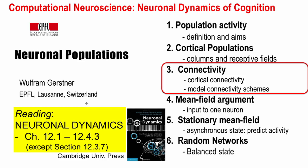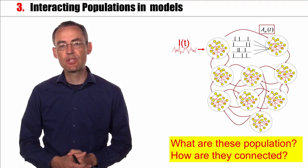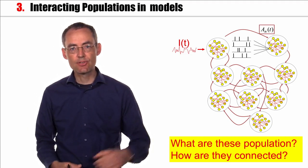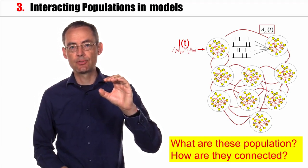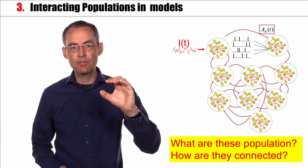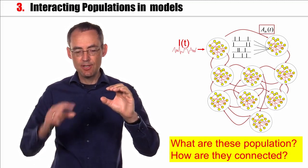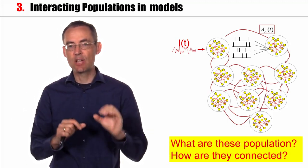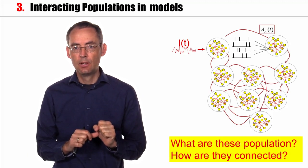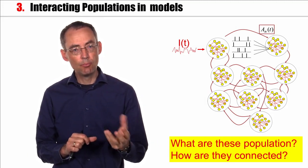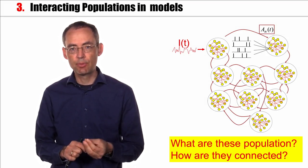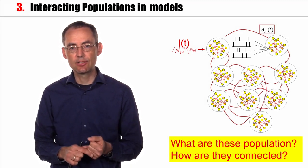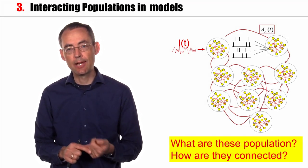Welcome back to the class Computational Neuroscience, Neural Dynamics of Cognition. In the previous section, we defined populations as ensembles of neurons with very similar properties. Now there will be many of these populations, and these different populations will interact with each other. Can we make this notion more precise? What are these populations, and how are they connected within and between each other?